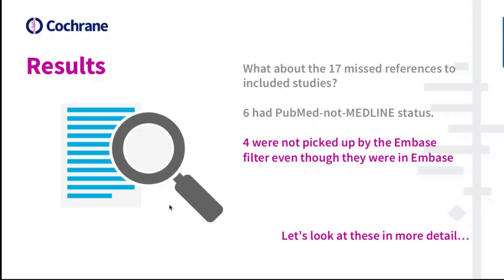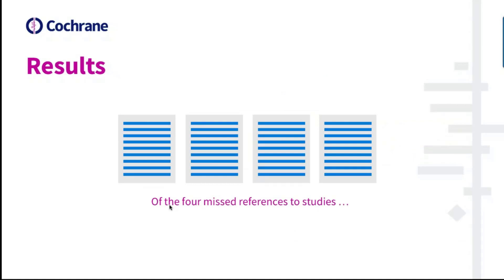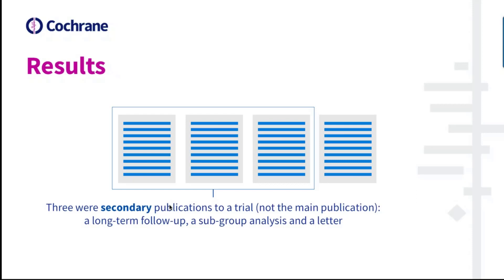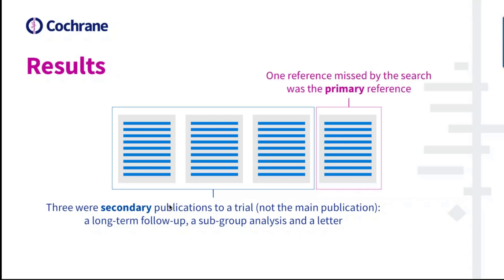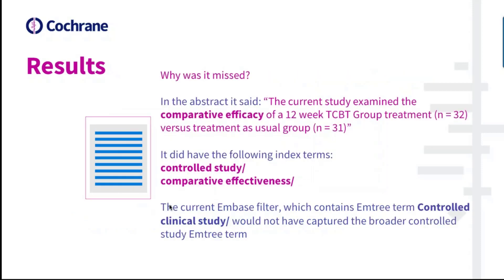Four were not picked up by the Embase filter, even though they were in Embase. Of these four, three were secondary publications — not the main publication to the trial. Only one was the primary reference to the trial and was the only reference given for that trial in the review. That reference was missed because it was not explicit in the title, abstract, or index terms that it was an RCT. The closest indication was the phrase 'comparative efficacy of a 12-week' in the abstract. It had 'controlled study' and 'comparative effectiveness' as index terms, but the Embase filter does not currently include these terms — only the narrower term 'controlled clinical study'.